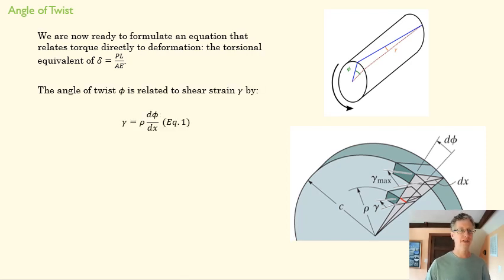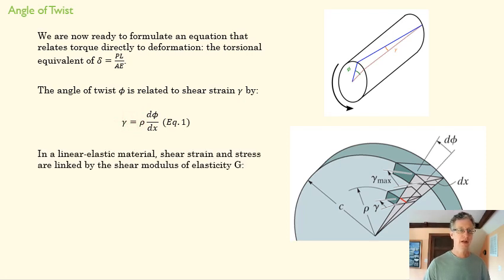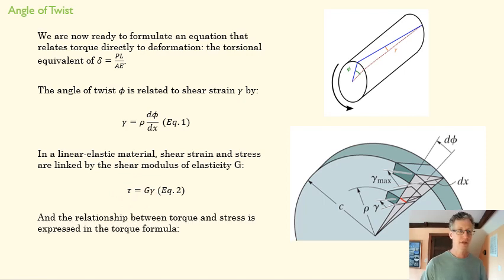We know the angle of twist is defined by the rate of deformation, that is the change in the angle of twist as we move along in the x direction, times the radius, which gives us our shear strain. In a linear elastic material, shear strain and shear stress are linked linearly by the shear modulus of elasticity, and we know the relationship between torque and stress as expressed in the torque formula. Those are going to be our three starting points to find our deformation equation.